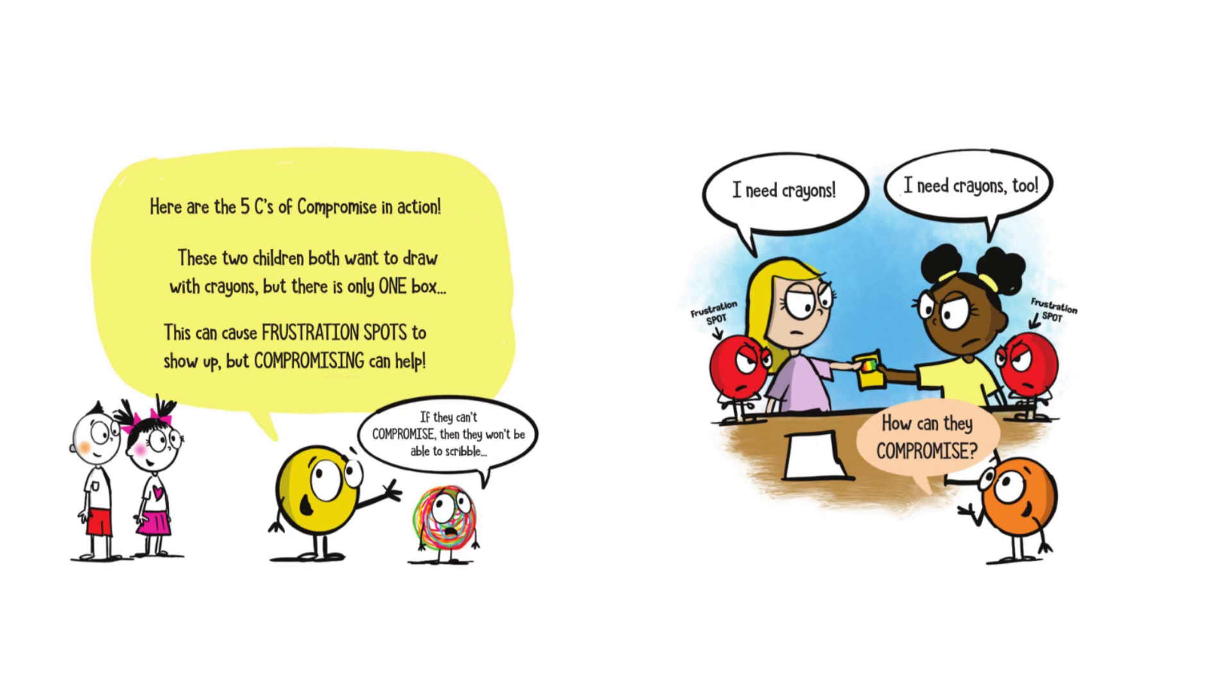Here are the five C's of compromise in action. These two children both want to draw with crayons, but there is only one box. This can cause frustration spot to show up, but compromise can help. If they can't compromise, then they won't be able to scribble. I need crayons! I need crayons too! How can they compromise?